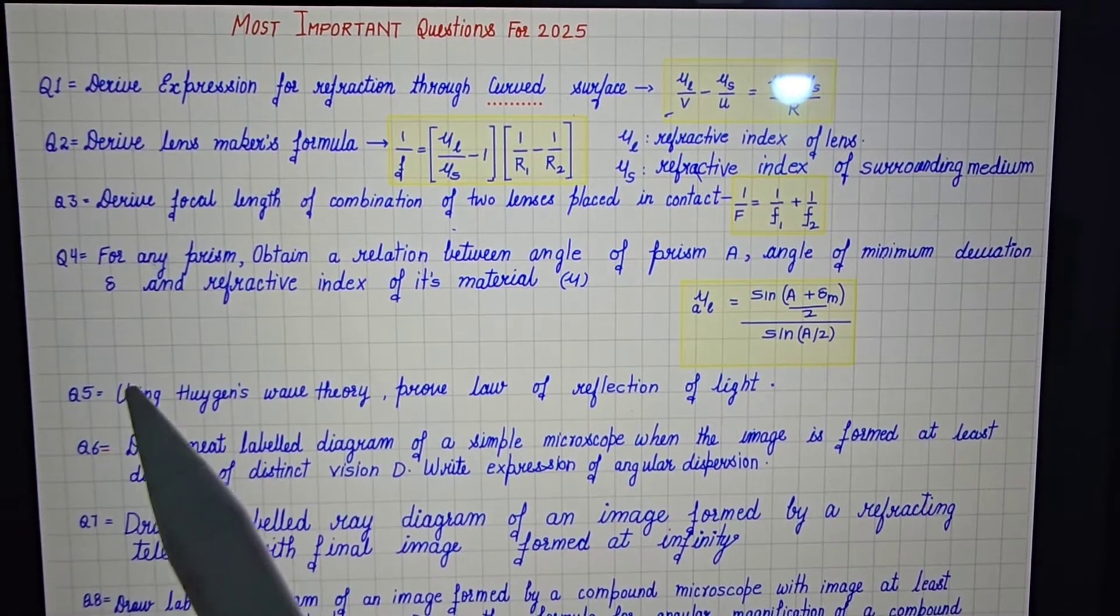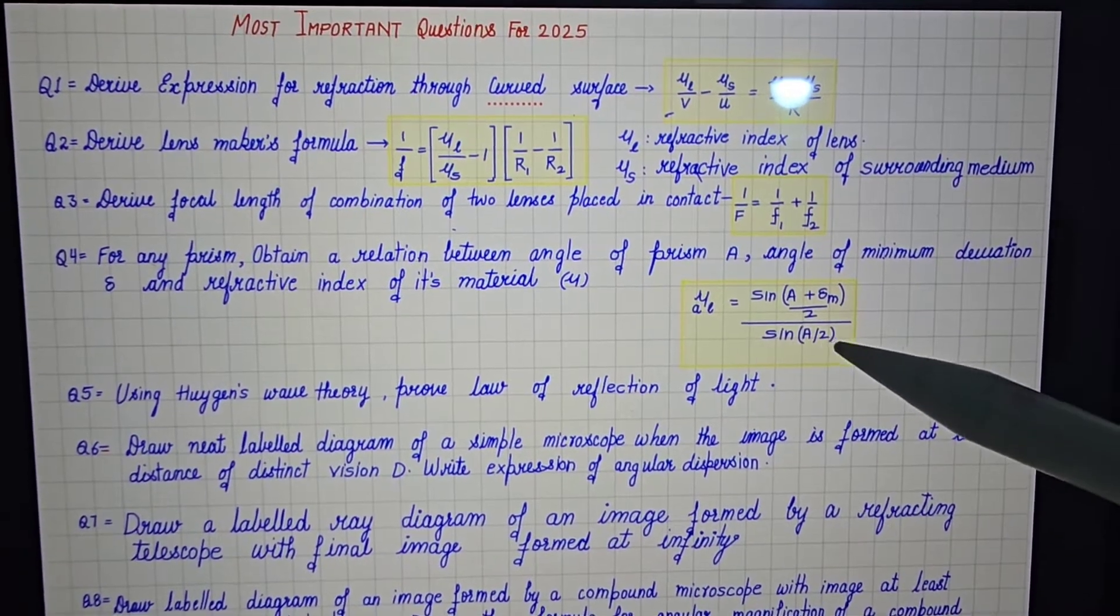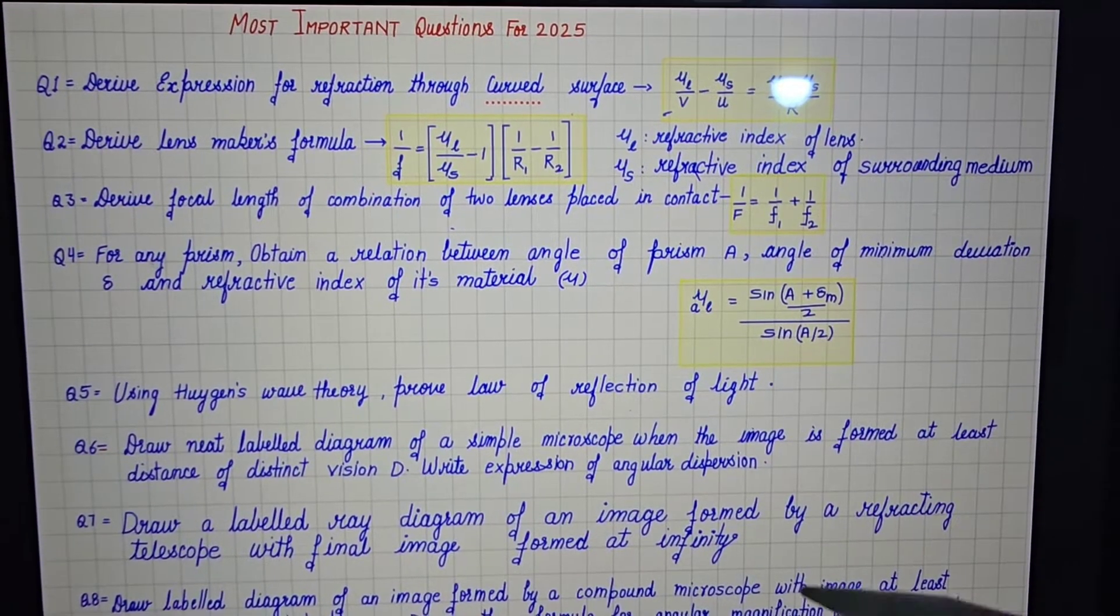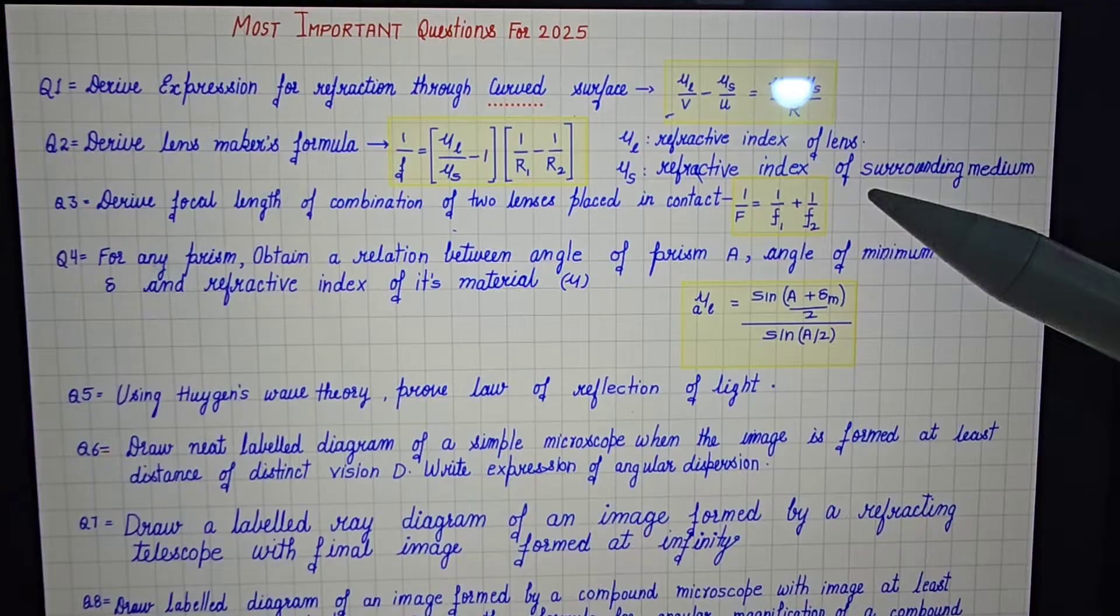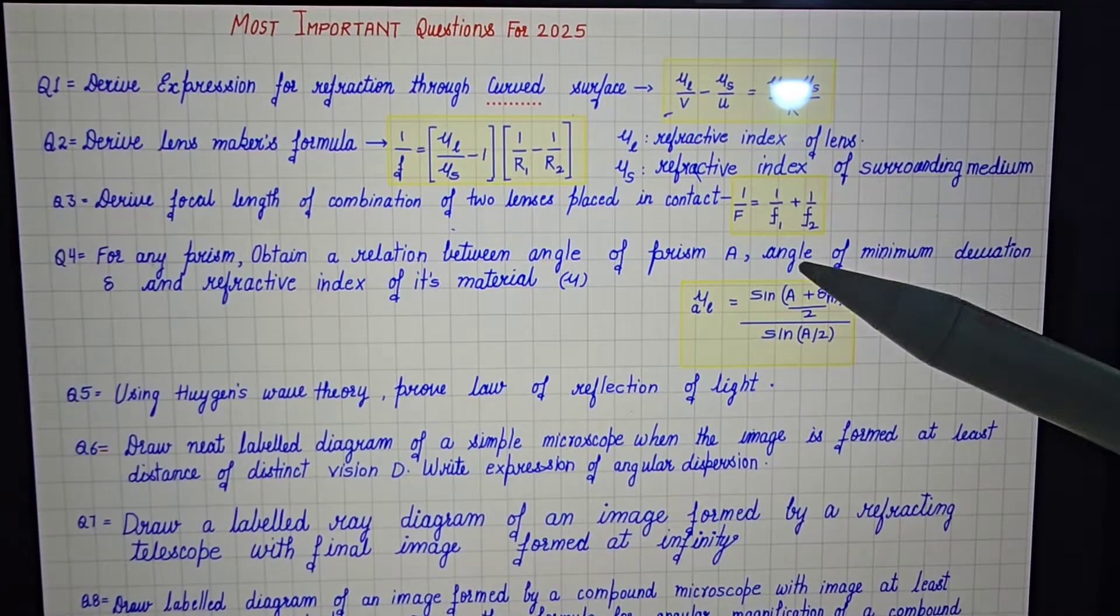According to my analysis of the 10 years, 15 years pattern, this derivation for prism is very important for this year. So total eight derivations I have found which are very expected and one or two derivations from this series you must find in your question paper.